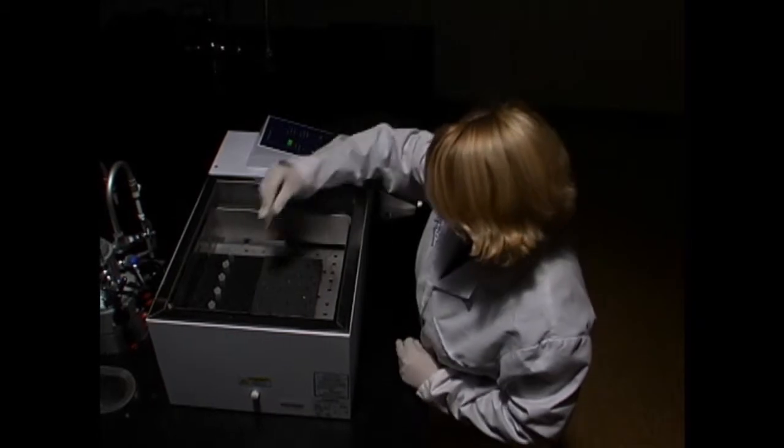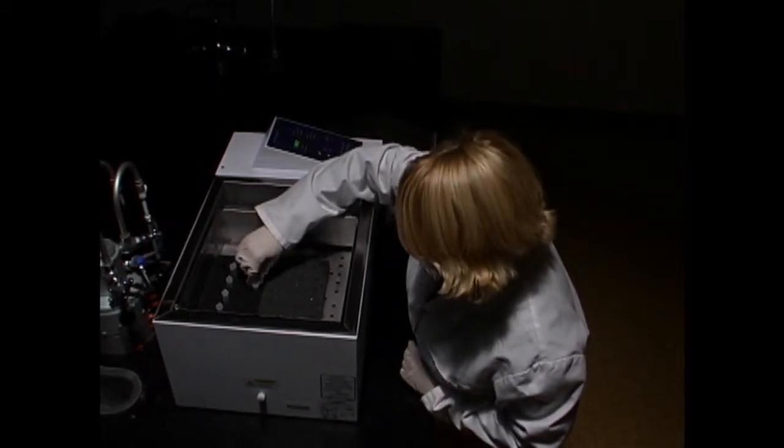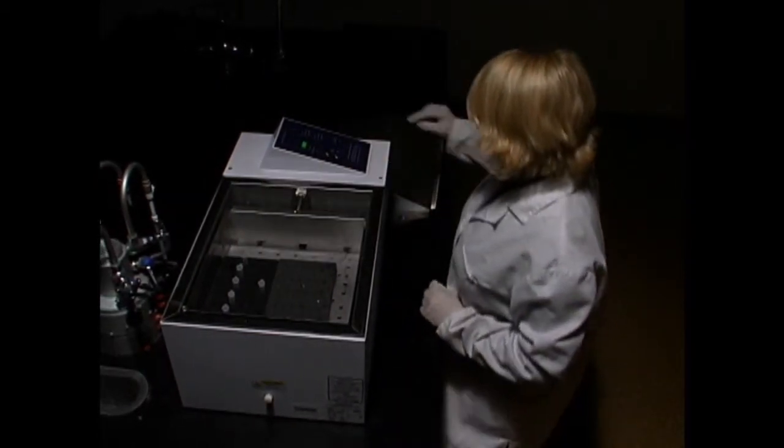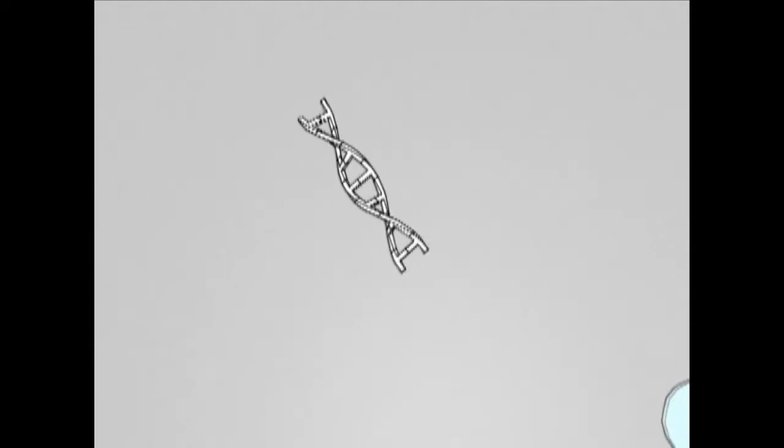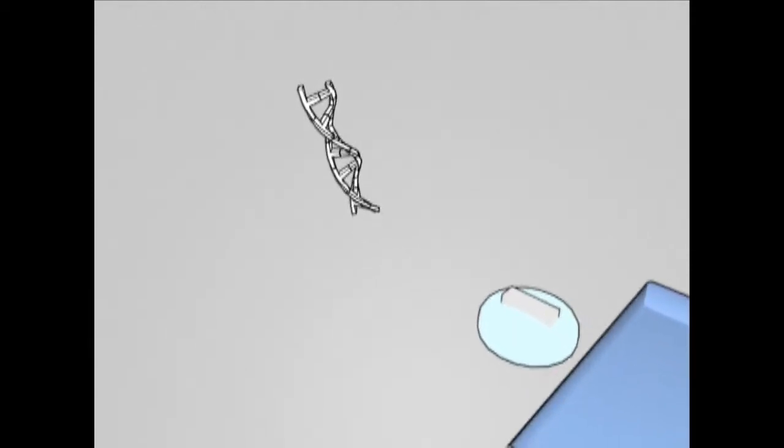The sample now contains plasmid DNA, degraded RNA, and some residual chromosomal DNA. To separate these elements further, a process called electrophoresis is required.